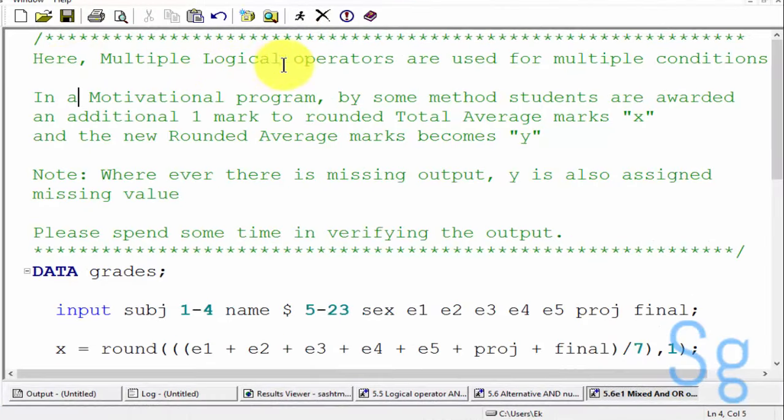Here multiple logical operators are used for multiple conditions. In this example, in a motivational program by some method, students are awarded an additional one mark to rounded total average marks and the new rounded average marks becomes Y.